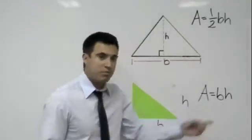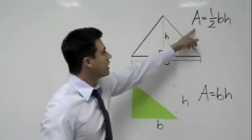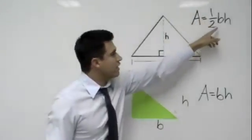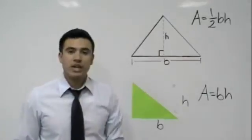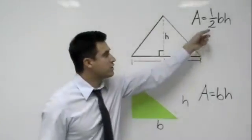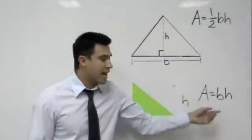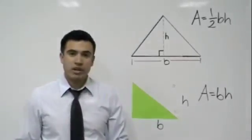It's half of a parallelogram. So the area for a triangle is one half of base times height, which means that's a better way for you guys to understand it than trying to memorize the formula. Just know that it's half of the area of a parallelogram.